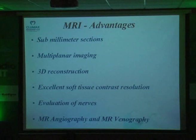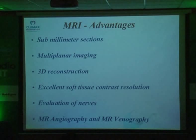MR also gives you a sub-millimeter section and the soft tissue resolution is amazing. But you cannot look at cortical bone — MR can look at only protons, and cortical bone is more calcium, so MR cannot look at calcium. Cancellous bone is good for MR; cortical bone is good for CT. For evaluation of nerves: MR, MR, and MR — no CT. You can also do MR angiography and MR venography.